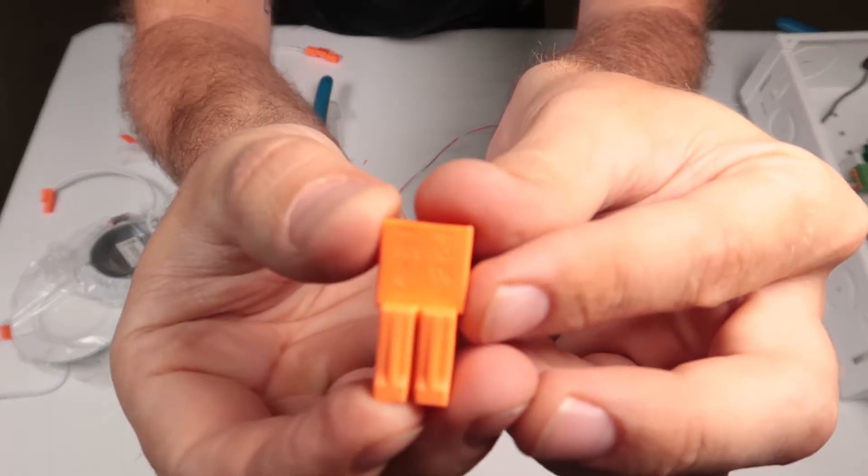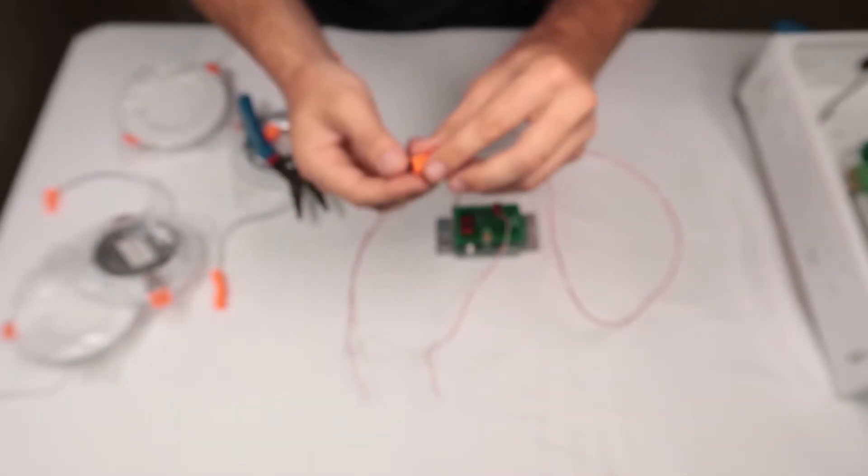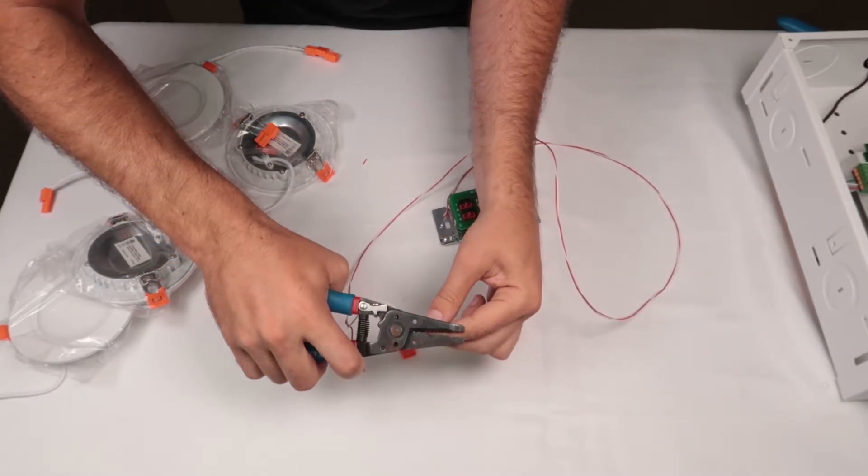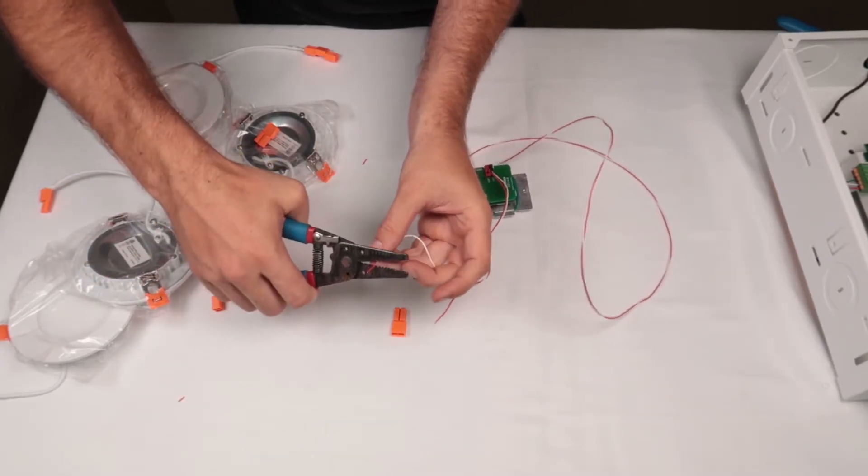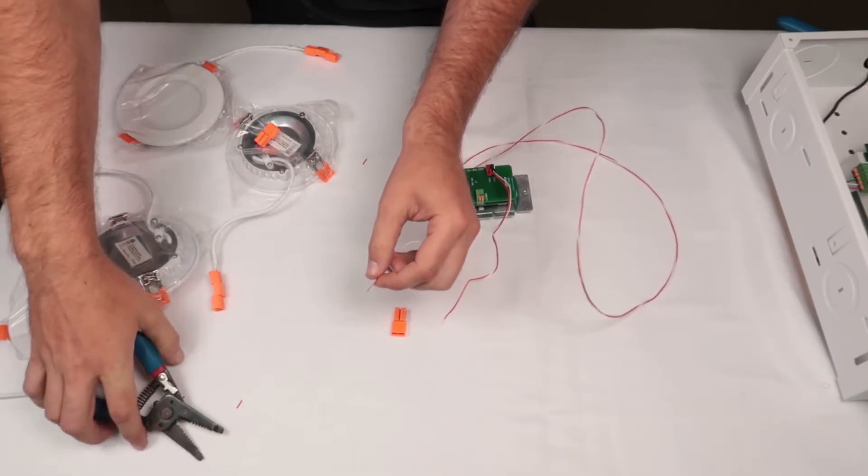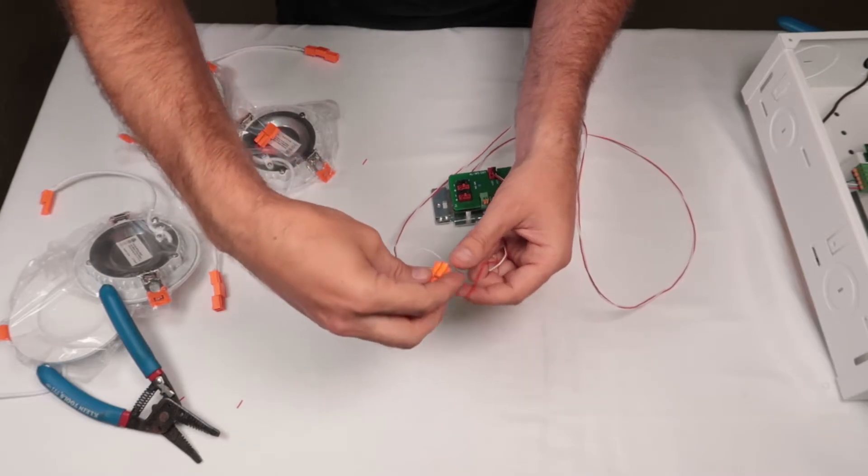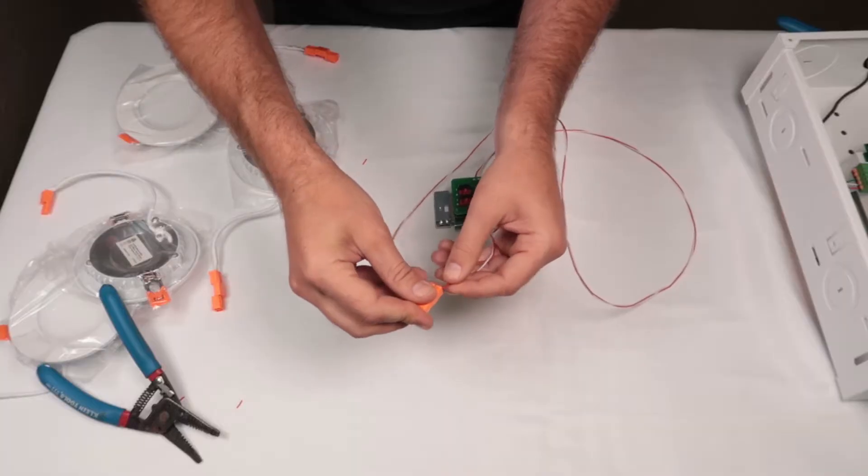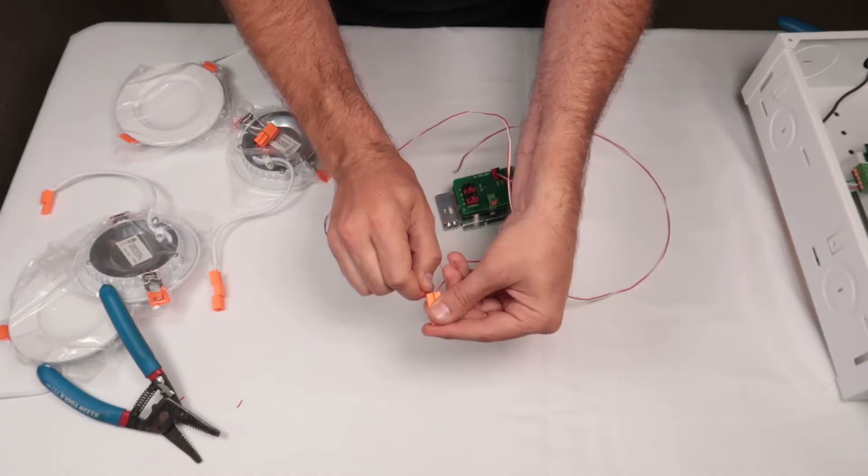The red wire end nearest the switch connects to the positive port of the connector, and the other red wire end will connect to the negative port before proceeding to the next light. In positive, out negative.